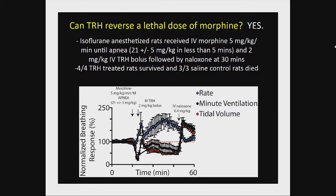We wanted to know how robust this effect is, so we gave rats a lethal dose — 5 mg/kg per minute — and drove them into apnea. Rats have oxygen consumption about 10 times that of humans, so they don't tolerate apnea and die within a minute. All 4 TRH-treated rats lived; all 3 saline controls died. Here's the normalized breathing response: start the morphine infusion, they go apneic, give 2 mg/kg bolus TRH, and it very nicely restored their breathing. But again it produced that rapid, shallow pattern. We reversed with Narcan at 30 minutes and saw a surge at the end.